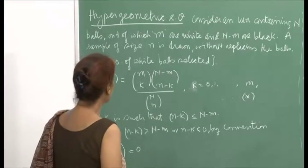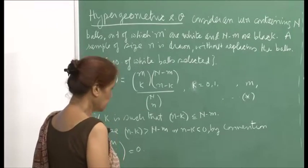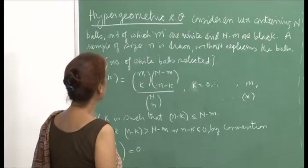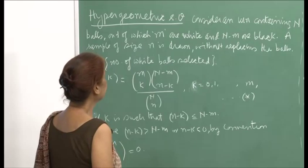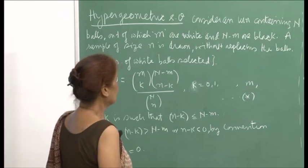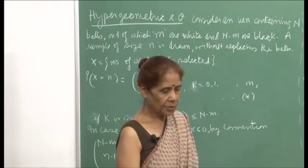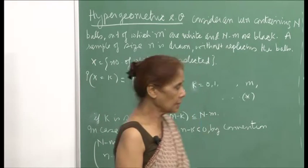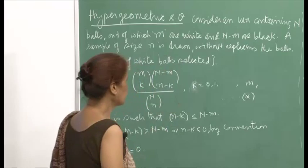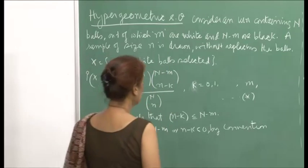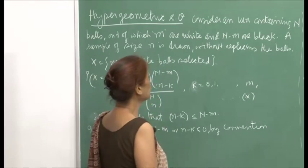Another discrete random variable which is quite useful is the hypergeometric random variable. I will demonstrate this through an example and define this variable and the corresponding distribution.